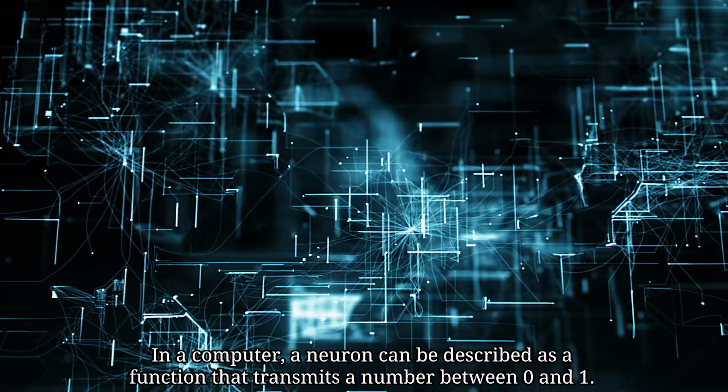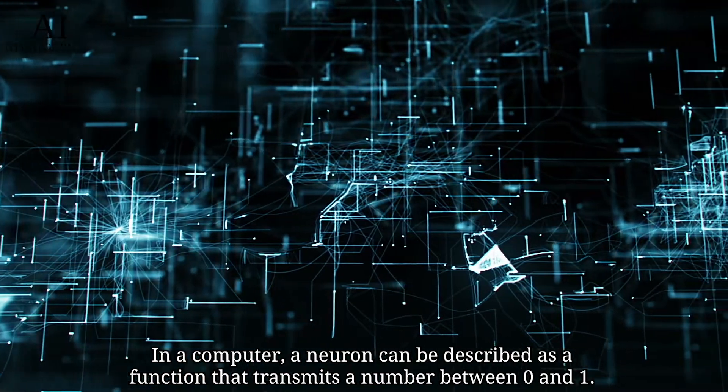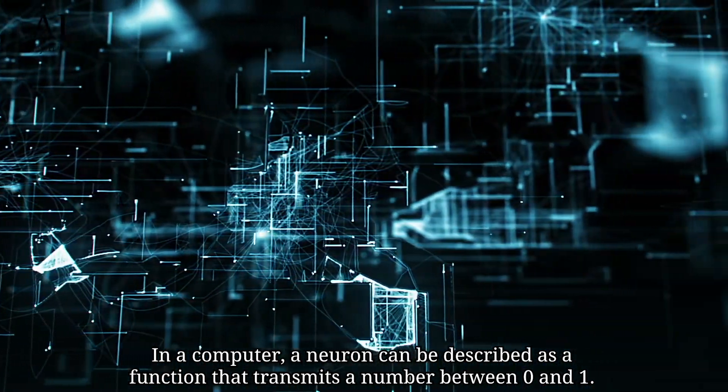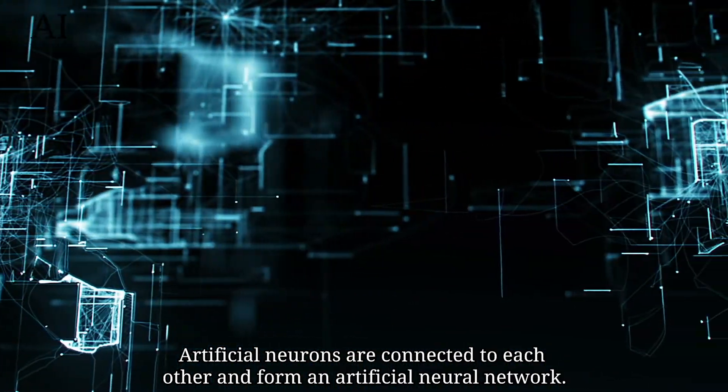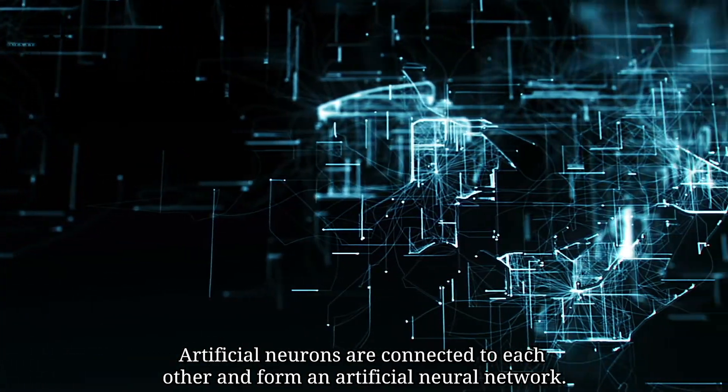In a computer, a neuron can be described as a function that transmits a number between 0 and 1. Artificial neurons are connected to each other and form an artificial neural network.